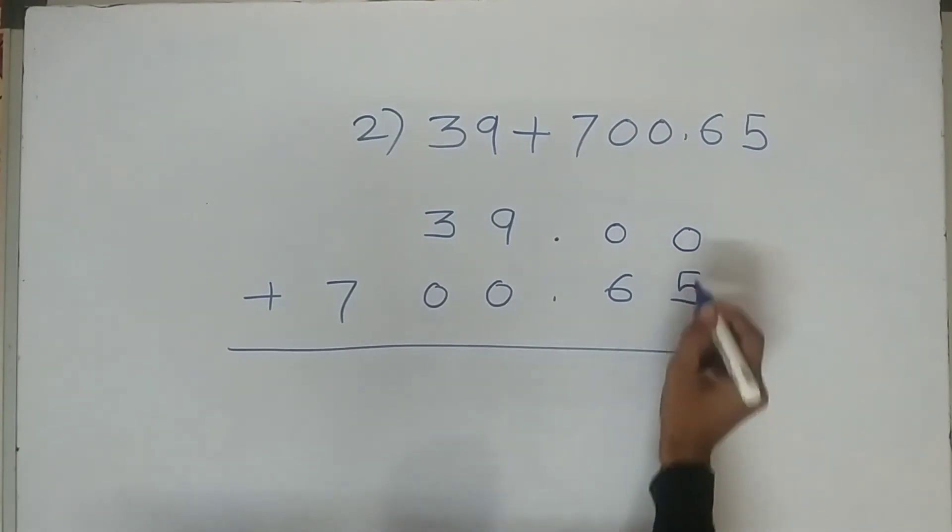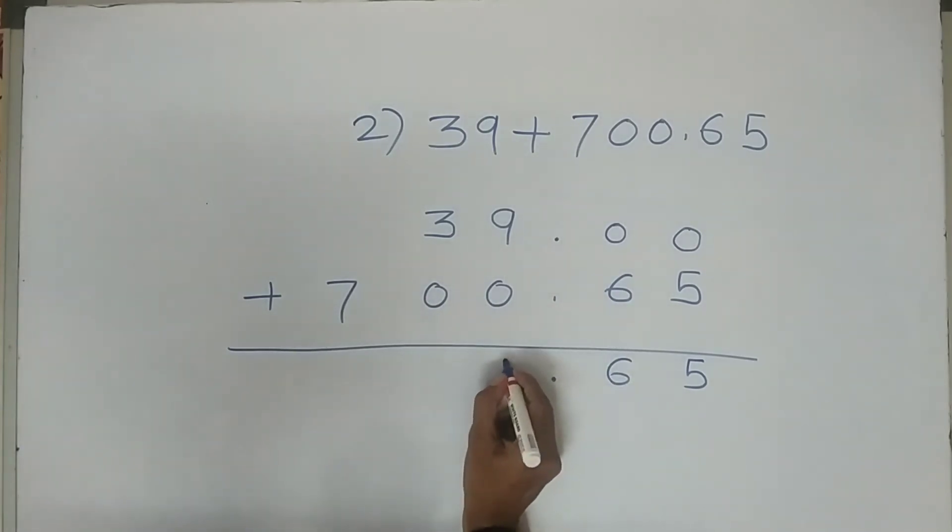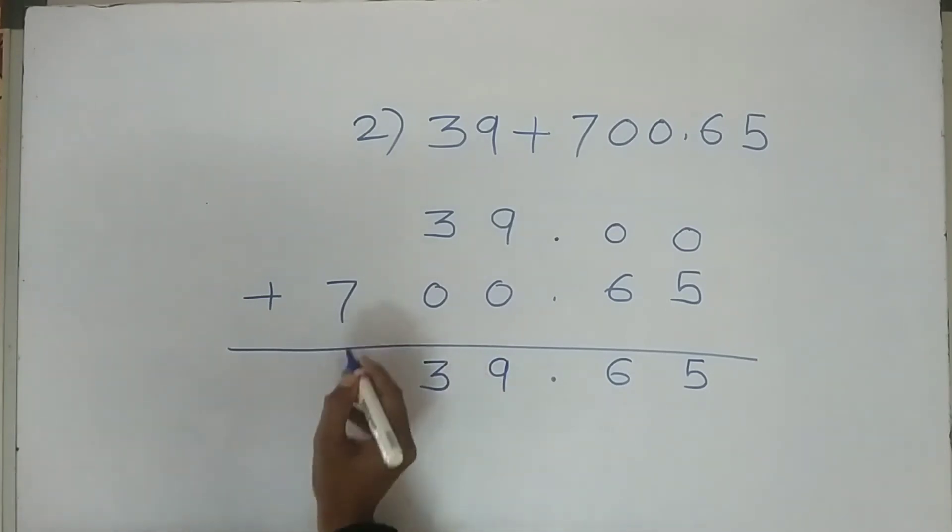Five plus zero is five, six plus zero is six. Put the decimal point. Nine plus zero is nine, three plus zero is three, seven as it is. So our answer is seven hundred and thirty nine point six five.